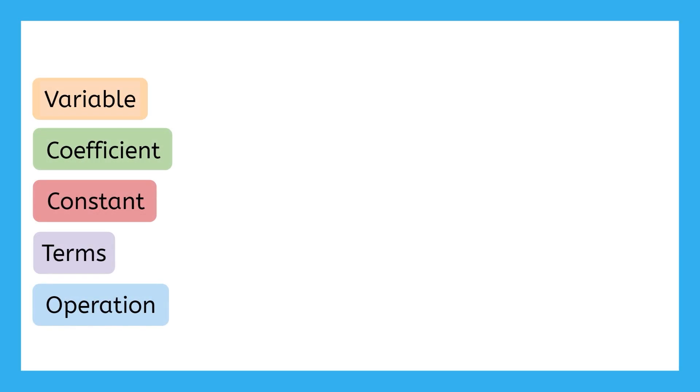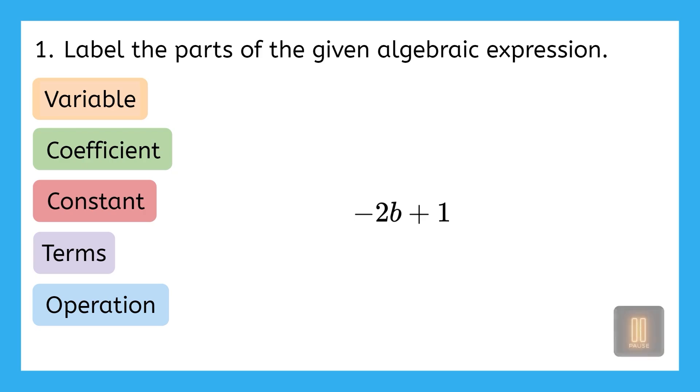Now we know that variables, coefficients, constants, terms, and operations are all parts of algebraic expressions. Can you use this new vocabulary to label the parts of the given algebraic expression, negative 2b plus 1? Pause the video here and give this a try in your guided notes.